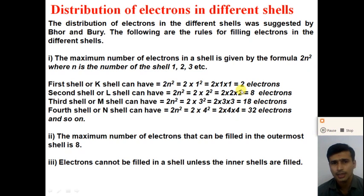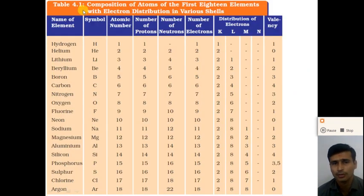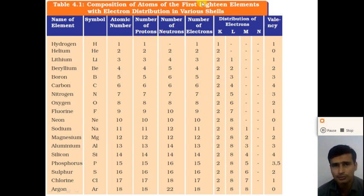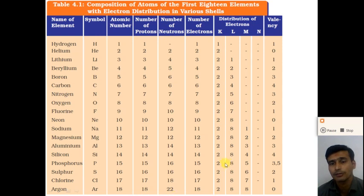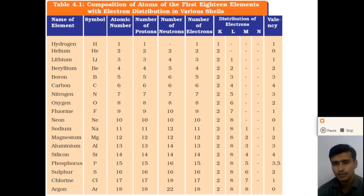Now we will see for some elements how the electrons are distributed. This distribution of electrons is called the electron configuration. We will discuss the electron configuration or electron distribution in different orbits for the first 18 elements, and from that we can understand about the valency of the atom.